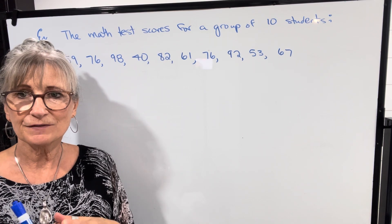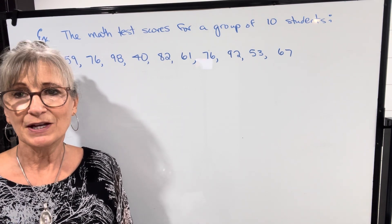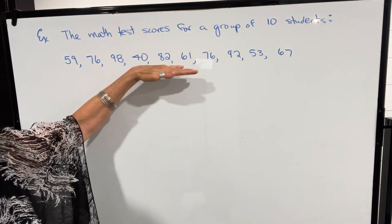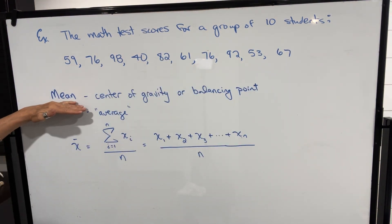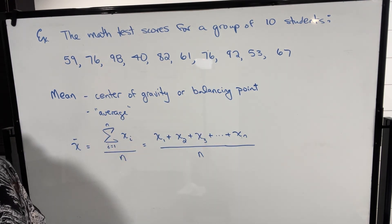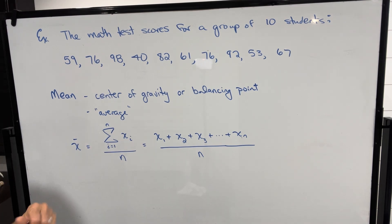The most important measurement of central tendency is going to be mean. I'm going to give you the formula and show you how that works with this set of scores. Mean is the most useful measure of central tendency, and we can think of it as being like the center of gravity or the balancing point of all that data. It's also called the average.